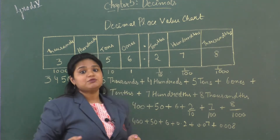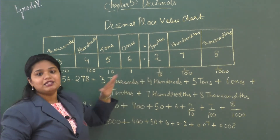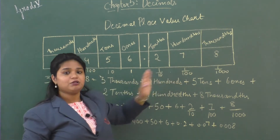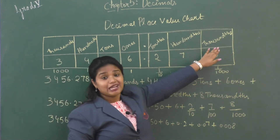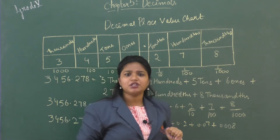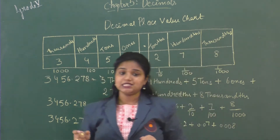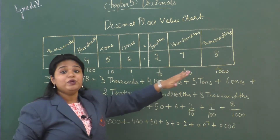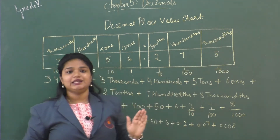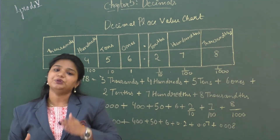Now what about the decimal place value? Tenths is represented as 1/10, meaning one part out of ten parts. Hundredths is represented as 1/100, meaning one out of a hundred parts. Thousandths is represented as 1/1000, that is one part out of a thousand parts. Here we have the number 3456.278 represented in the decimal place value chart. We read the decimal part individually — as two, seven, eight — not as two hundred seventy-eight.